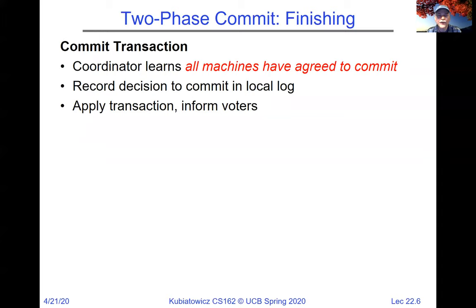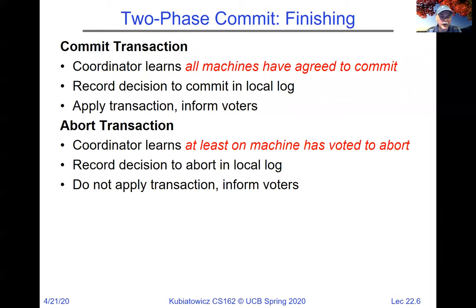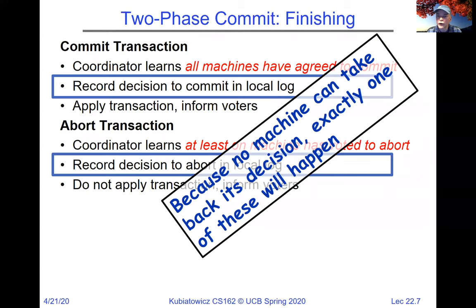In the commit phase, the coordinator learns all machines have agreed to commit, records its decision in the log, applies its transaction, and tells all voters to commit. Even if the coordinator crashes after making the decision, it'll see that in its log. If it comes back before making that decision, it'll assume it's missed some messages and tell everybody to abort. If at least one machine voted to abort, the coordinator records abort and tells the voters to abort.